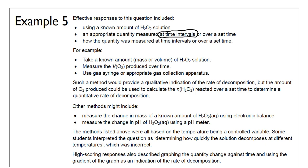High-scoring responses specify measuring the volume of oxygen produced at regular time intervals — for example, every 10 seconds — using a gas syringe. You can also discuss change in mass or change in pH as alternative measurement approaches. Top responses also describe graphing the measured quantity against time and using the gradient of the graph as an indication of the rate of decomposition. Being able to design or describe a method to measure reaction rate is the key final skill for this topic.